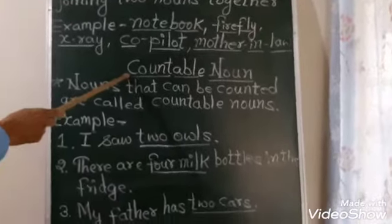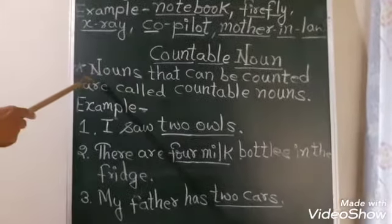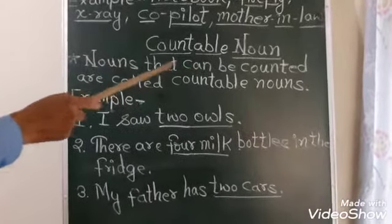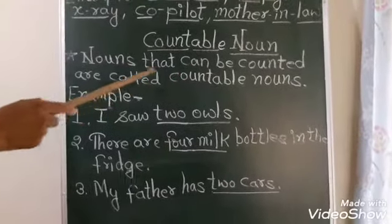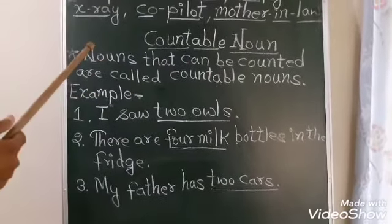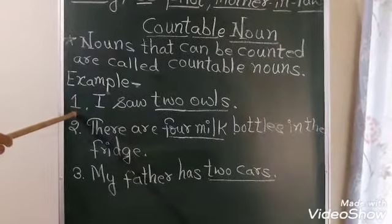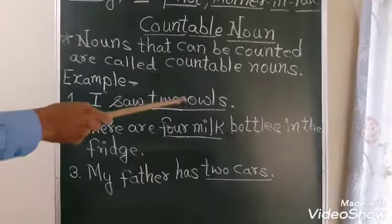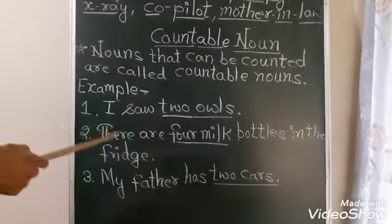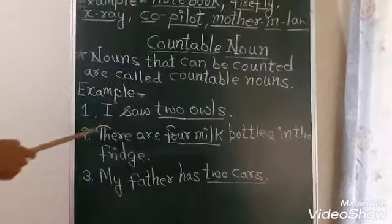Now next is countable noun. Nouns that can be counted are called countable nouns. For example, I saw two owls. We can count.